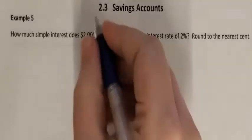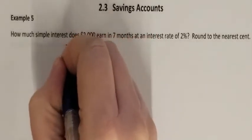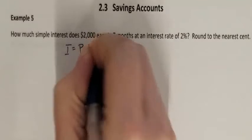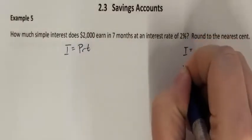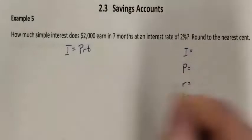This is a simple interest equation: I equals PRT, where we need to know I, P, R, and T.